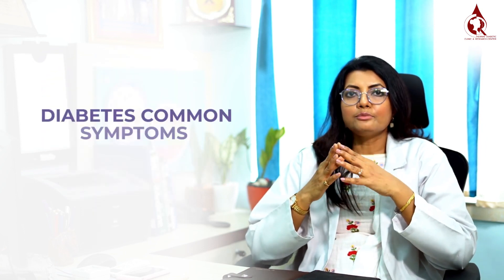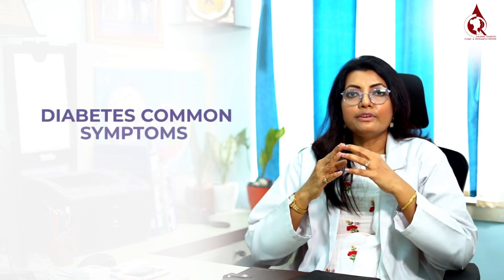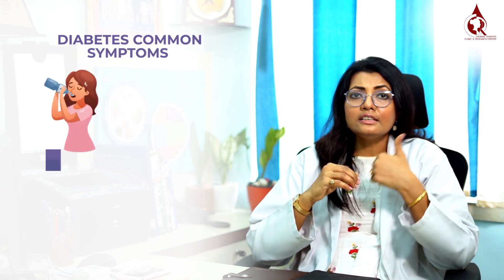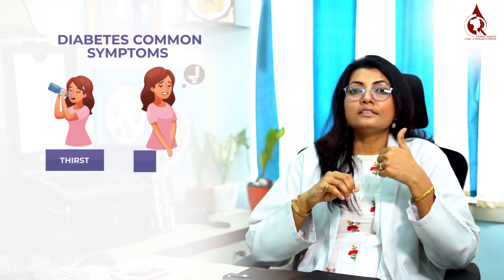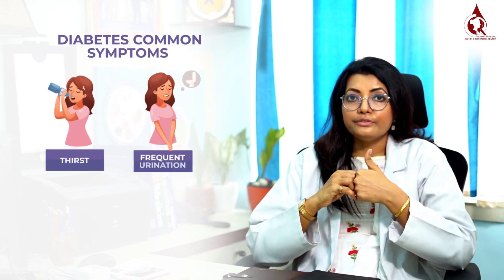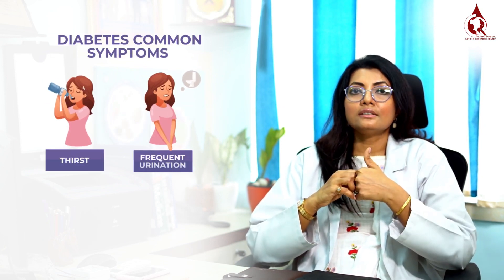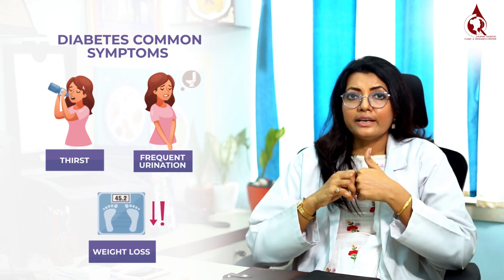Now, this high blood sugar, if it is continuously there in the blood, it actually produces several symptoms. Many of the symptoms we know very frequently — it is very common — such as increased thirstiness, increased frequency of urination, and loss of weight.